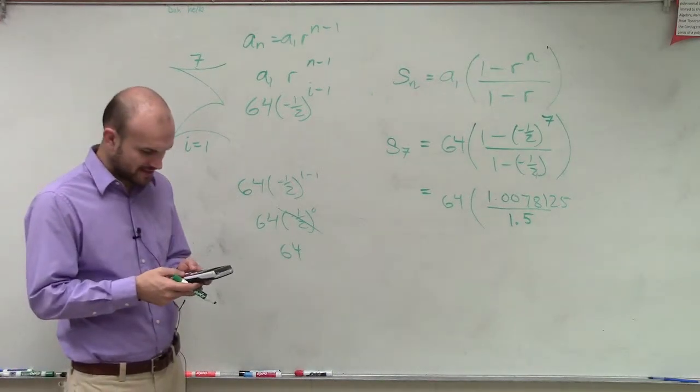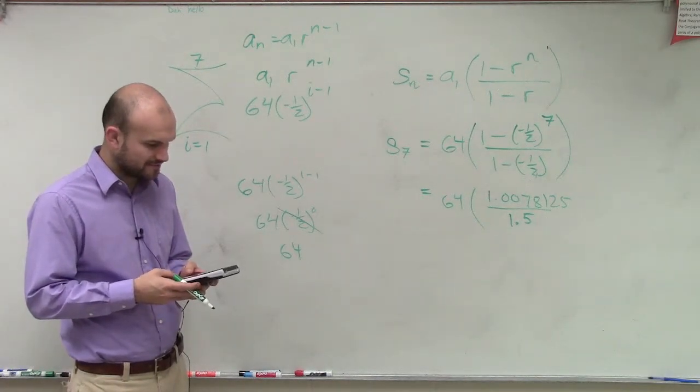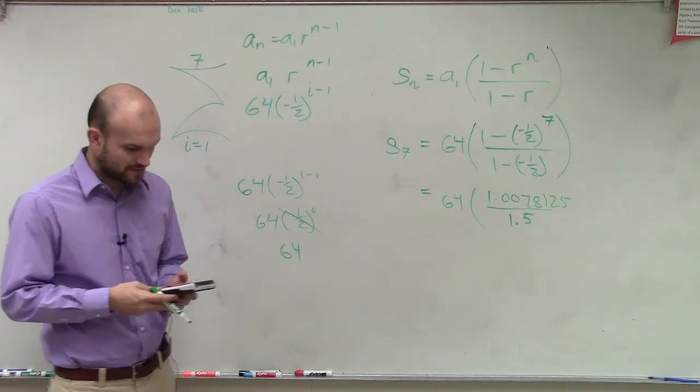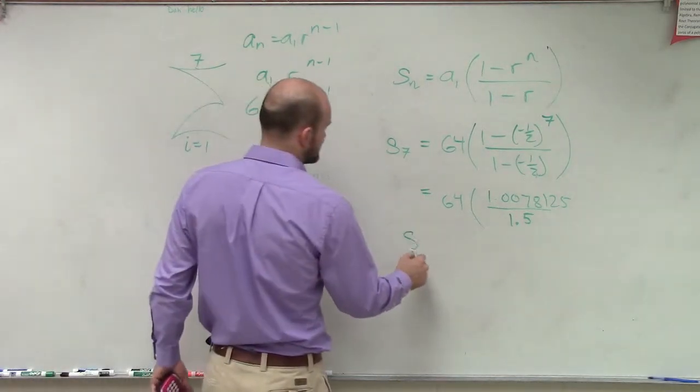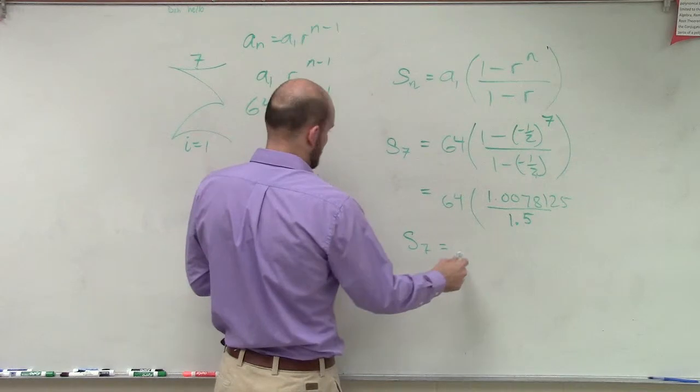So therefore, now I'll just take that, divide it by 1.5, and then multiply that by 64. And therefore, we get s of 7 is 43.